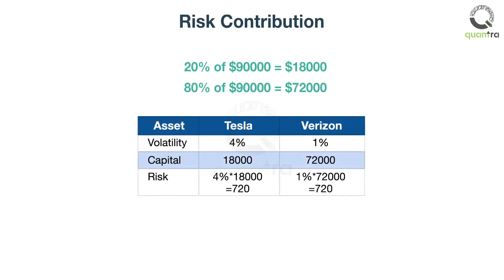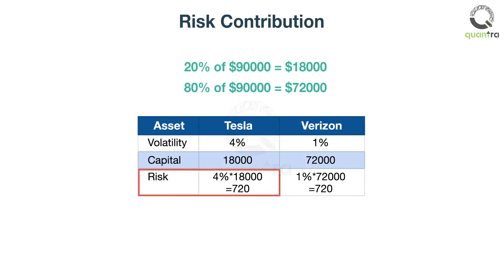John is very happy. Even though the daily volatility of Tesla is 4%, it has a risk contribution of 720. And Verizon also has the same amount of risk contribution.